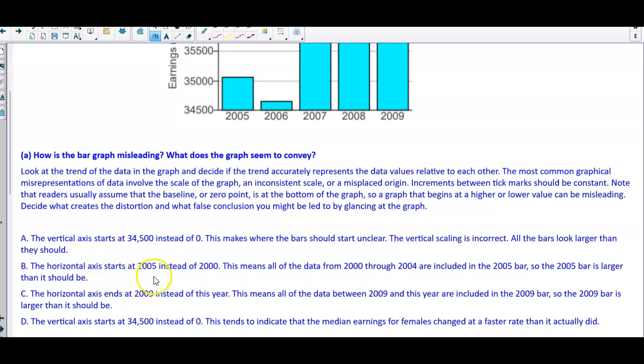The horizontal axis starts at 2,500 instead of 2,000. That's okay because this is all we're looking at, so we can not include B. Same thing with C, we can go ahead and get rid of that. Now let's take a look at D.